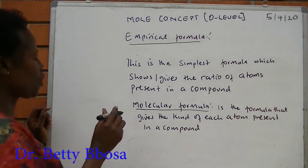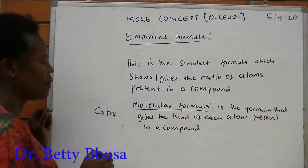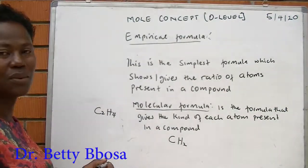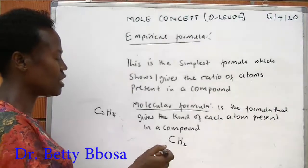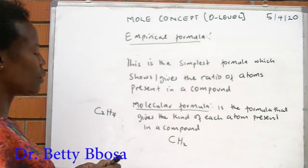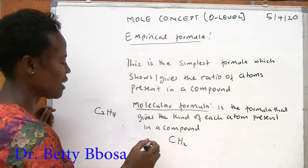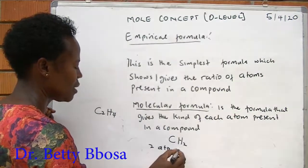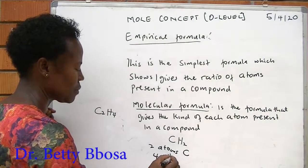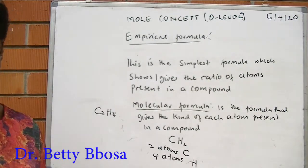For example, in a molecule of ethene, the empirical formula will be CH2, showing that we have carbon and two hydrogens. But the molecular formula will give us exactly what ethene is. It will tell us that we have two atoms of carbon, four atoms of hydrogen. Exactly what it represents.